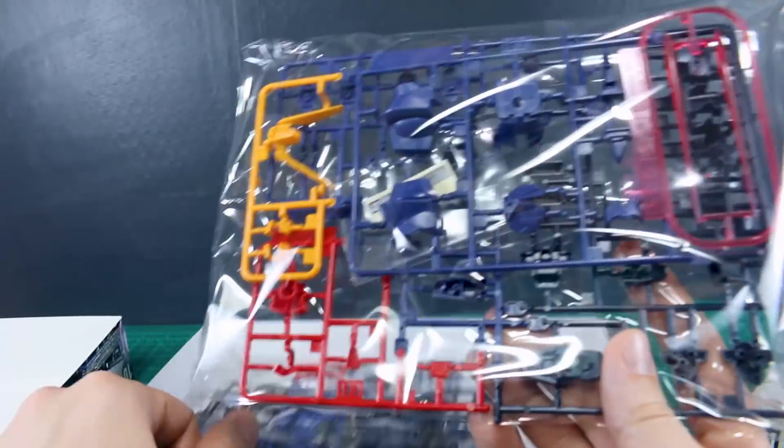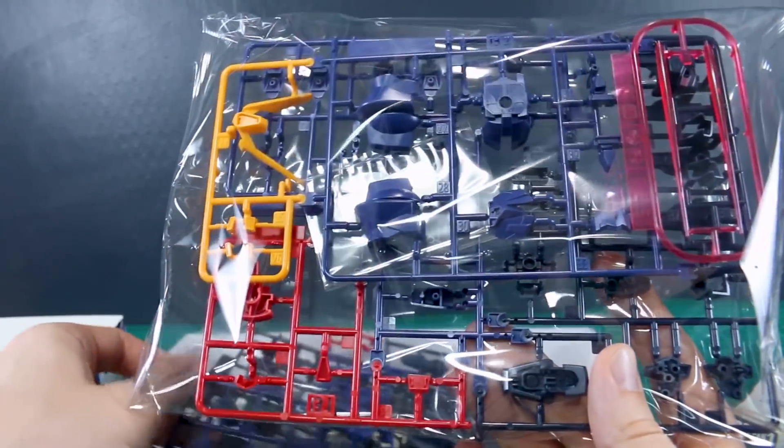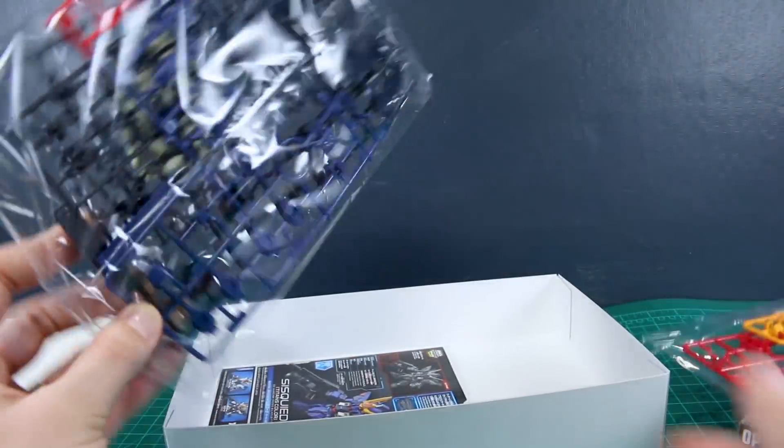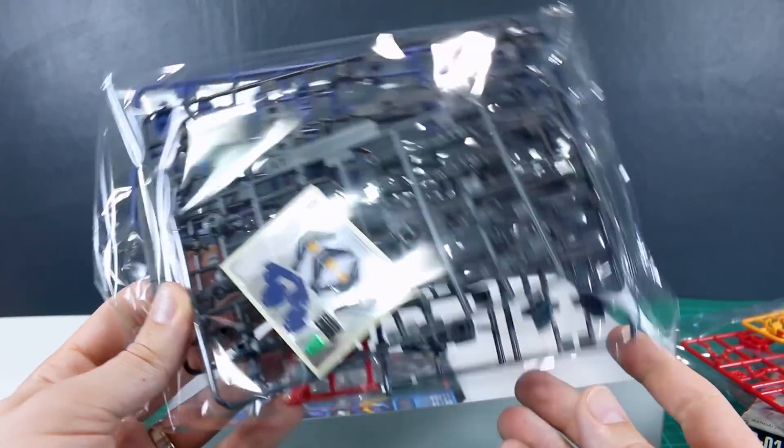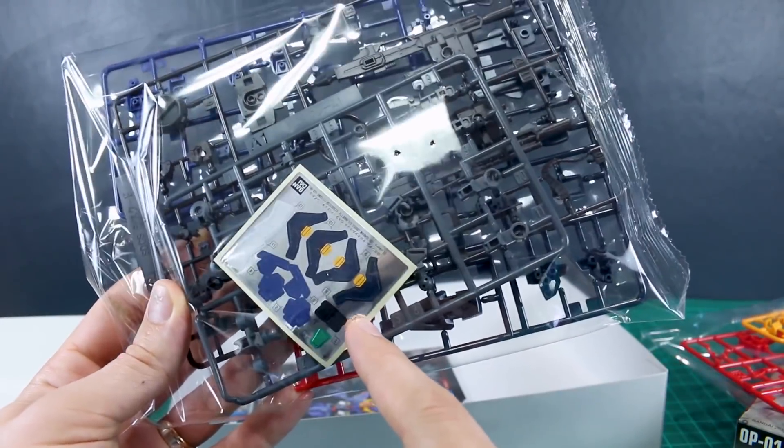So basically they're just going to be all regular Titans colors. Two-tone blue, yellow, red, and then the dark gray parts here for the frame. It does have some stickers there, but it really doesn't look at all too bad for an SD kit.